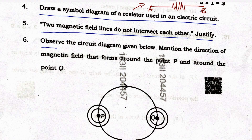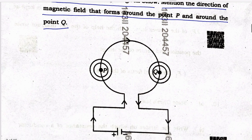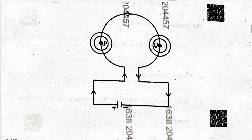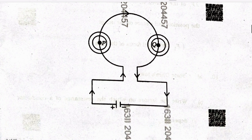Question 6: observe the circuit diagram given below. Mention the direction of the magnetic field that forms around point P and around point Q. As you can see, it is clockwise and anti-clockwise.